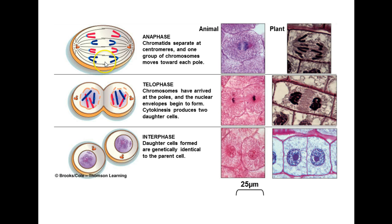In telophase, the chromosomes have reached opposite ends of the cell and begin to uncoil back towards chromatin. New nuclear envelopes begin to form around those chromosomes, and cytokinesis occurs — the process of splitting the cytoplasm — dividing it into two new cells. These two new cells bring us back to our starting place; we're back to interphase.